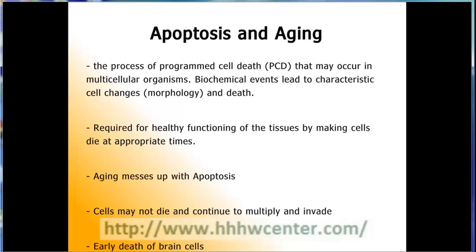Cancer cells continue to multiply and invade or take over surrounding tissue instead of dying as originally programmed. Other diseases may cause cells to die too early. In Alzheimer's disease, a substance called amyloid builds up and causes the early death of brain cells, resulting in a progressive loss of memory and other brain functions. Toxins produced as byproducts of nerve cell transmissions are also thought to be involved in the death of nerve cells in Parkinson's disease.